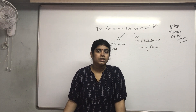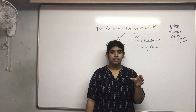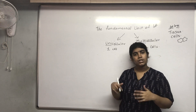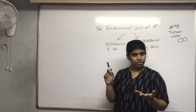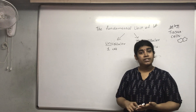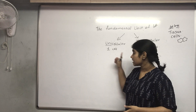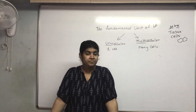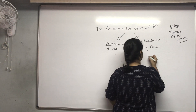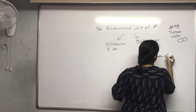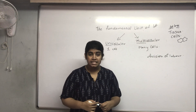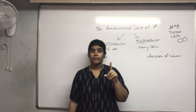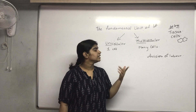Each individual cell has been assigned certain functions. In a unicellular cell, everything — respiration, digestion, excretion — is present in that one cell itself. In multicellular organisms, there is a division of labor. For example, if you have a class project, one task is shared by many people — each person does a part.